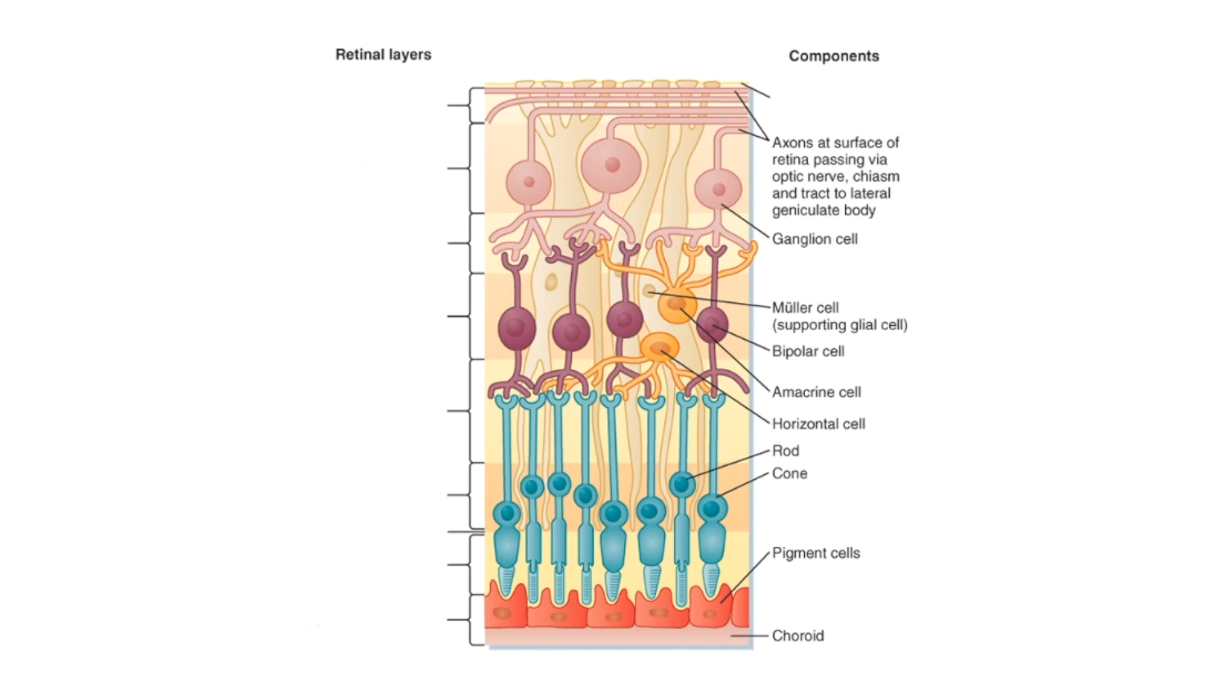Hello everyone, today I found a good mnemonic for retinal layers. Let's see first what are the 10 layers of retina. The first layer is inner limiting membrane, then nerve fiber layer, then ganglion cell layer, then inner plexiform layers.